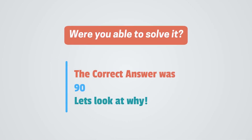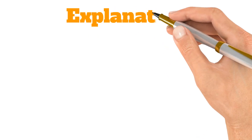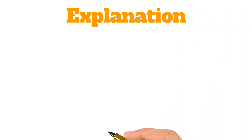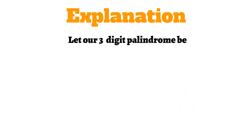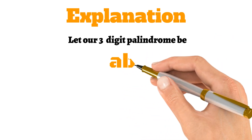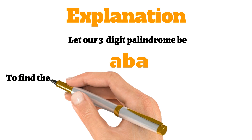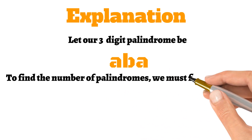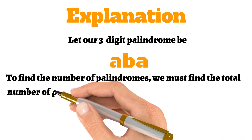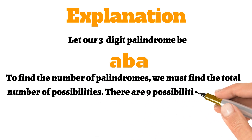Were you able to solve it? The correct answer was 90. Here is an explanation. Let our three-digit palindrome be ABA, where A and B represent digits. To find the number of palindromes, we just have to find the total number of possibilities. There are 9 possibilities for A and 10 possibilities for B. Thus, our answer is 9 times 10, which equals 90.